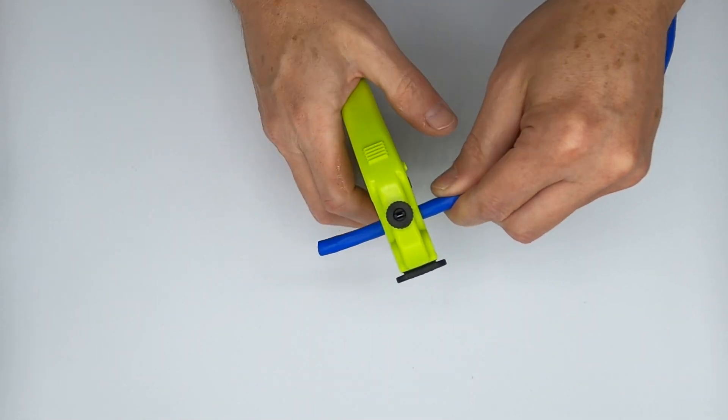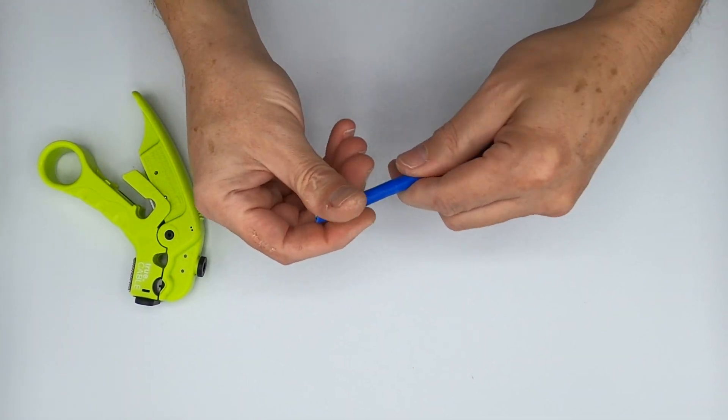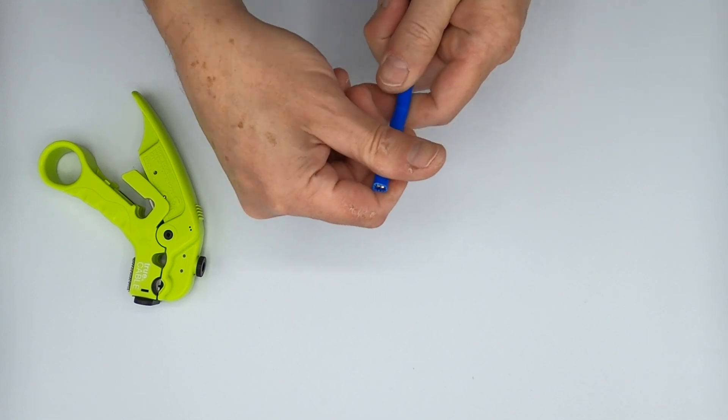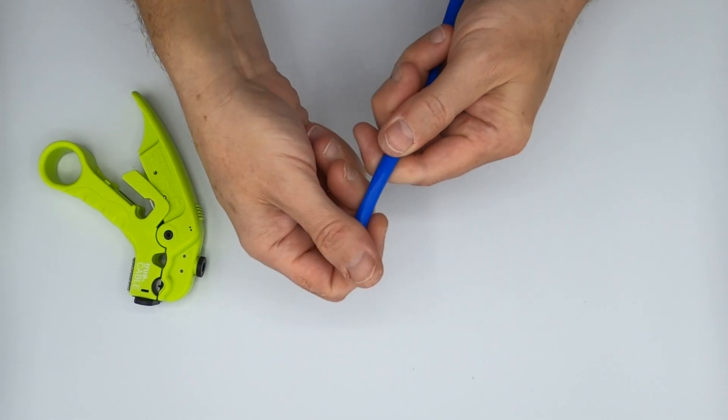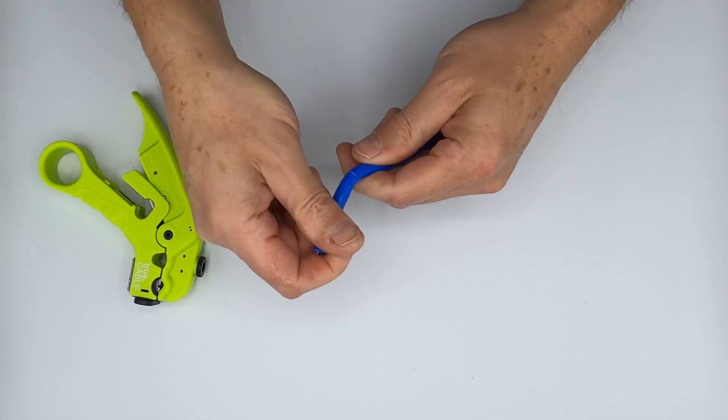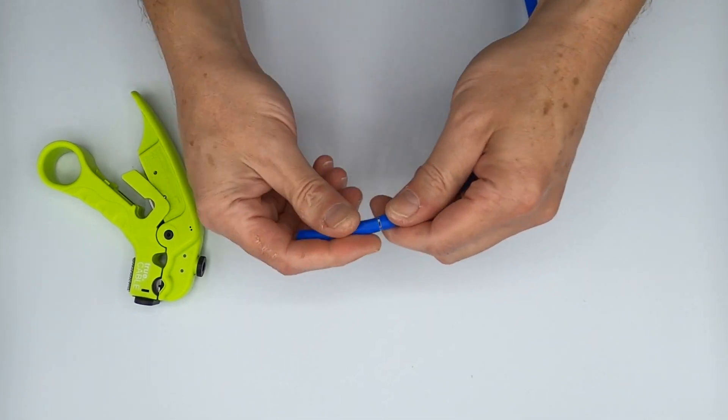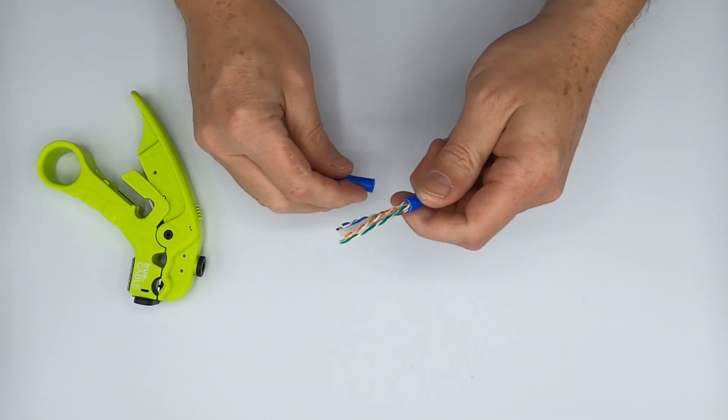Turn a couple of times, take it off, and then you'll notice that it has scored the cable jacket, but not actually cut through it. And that's what you want to see. So pop the jacket. You can just work it back and forth a couple of times. And there we go, it's popped off.